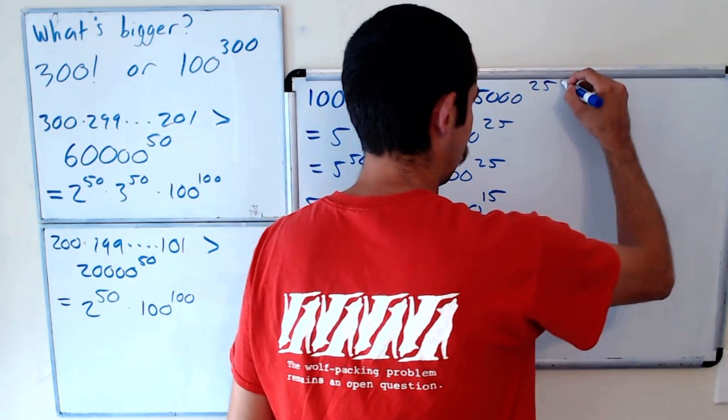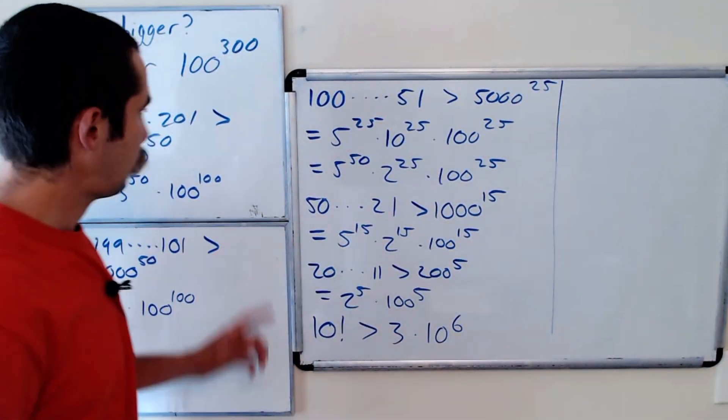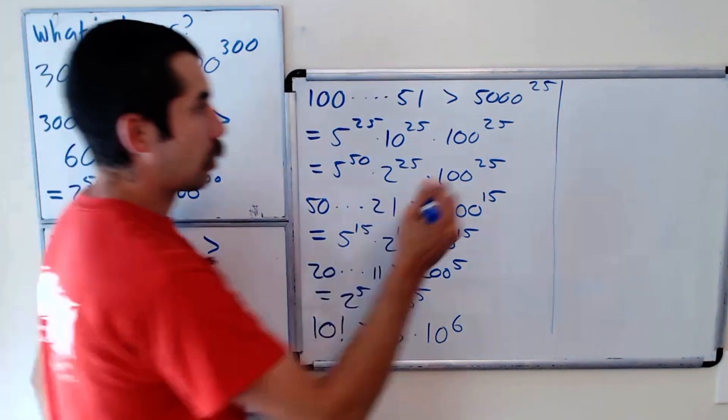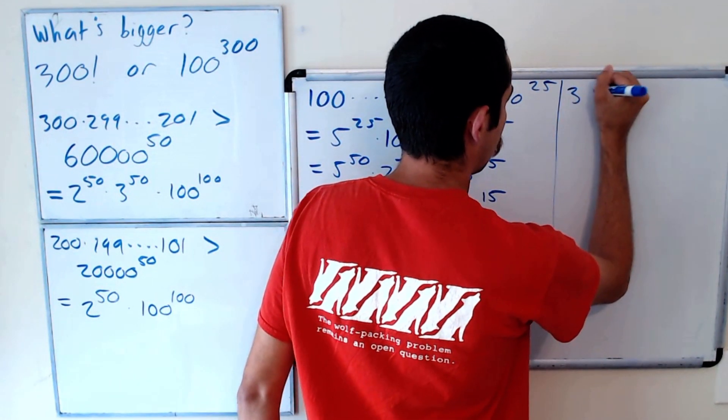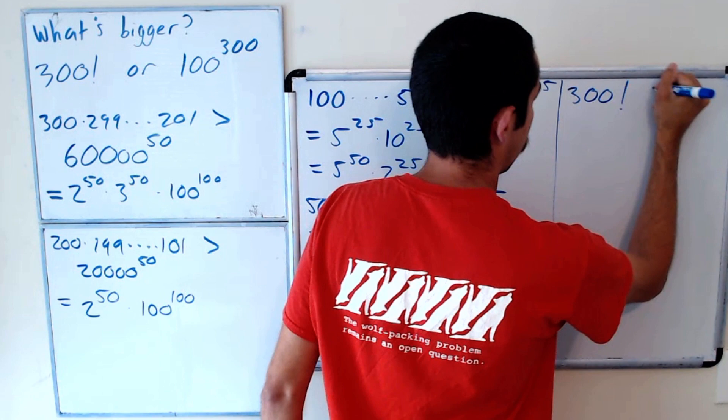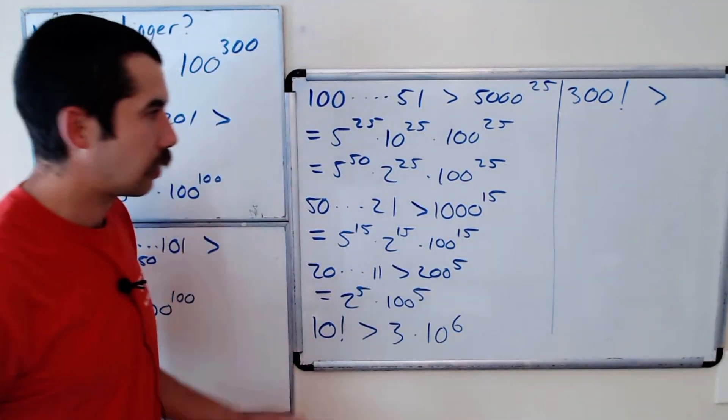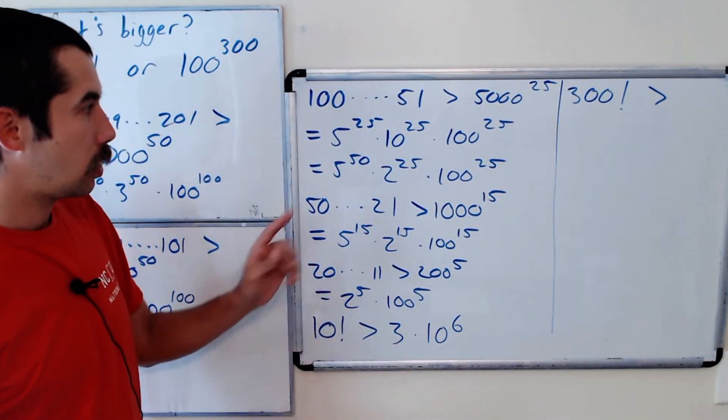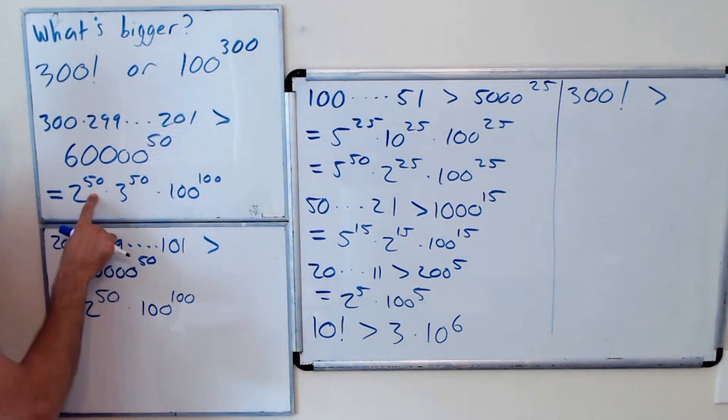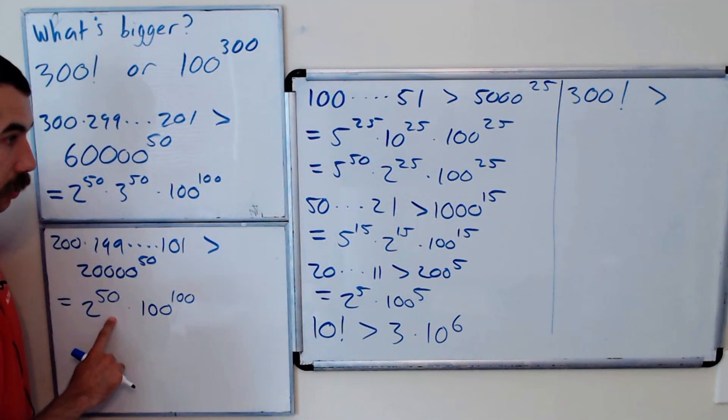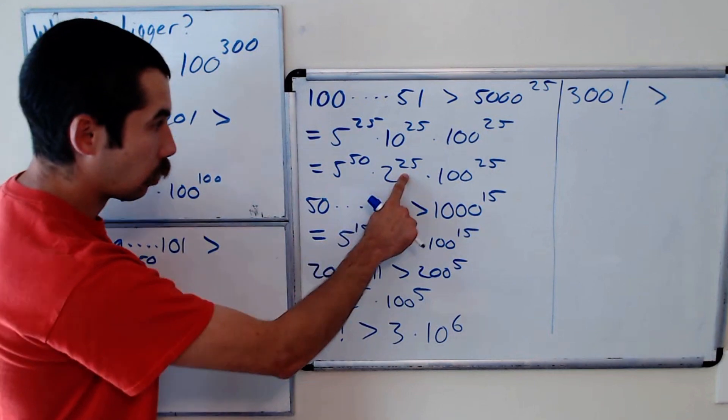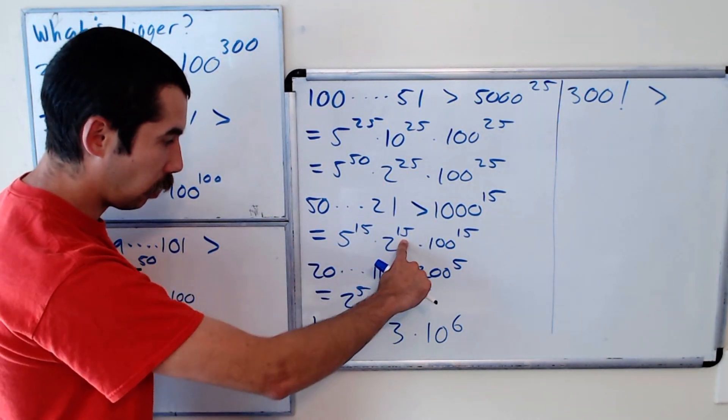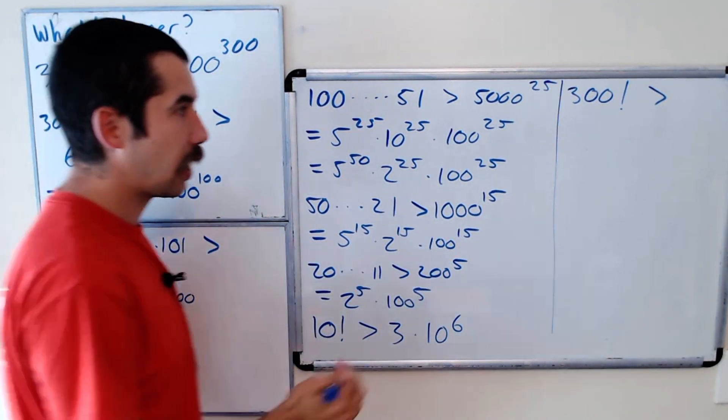Okay, so let's put this all together. We have that 300 factorial is greater than, let's combine terms. How many twos do we have? We have 50, 100, 100, 125, 140, 145.